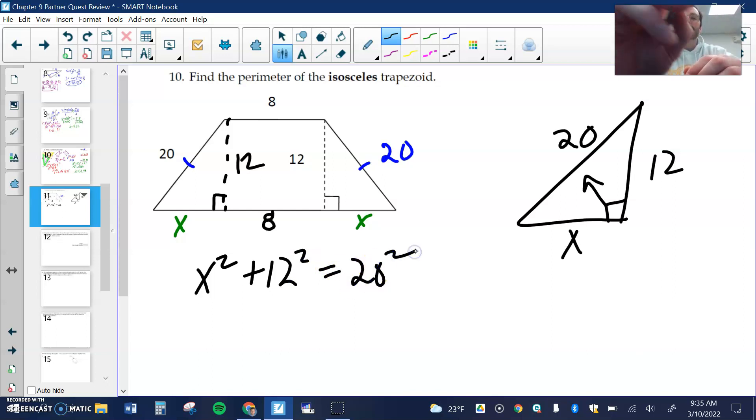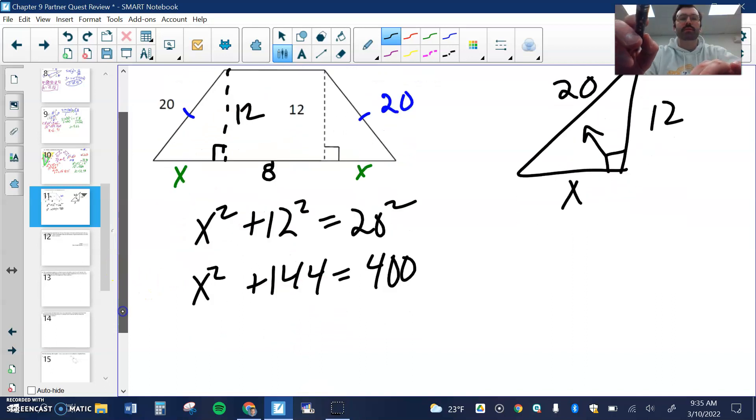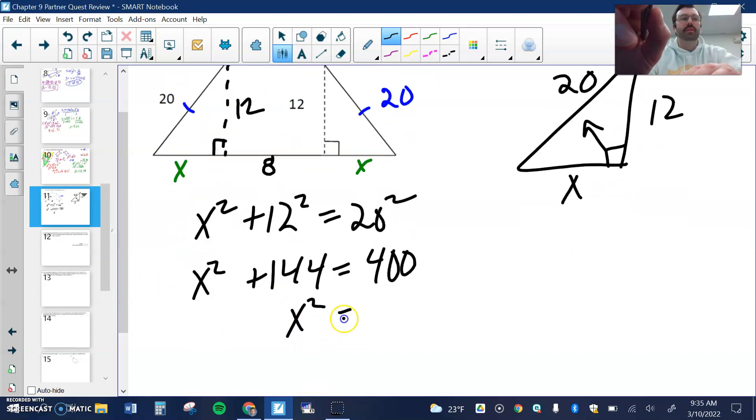I have x squared plus 12 squared equals 20 squared. x squared plus 144 equals 400. Subtract 144, x squared equals 256. Now luckily there is a square root of 256, so x is just 16.